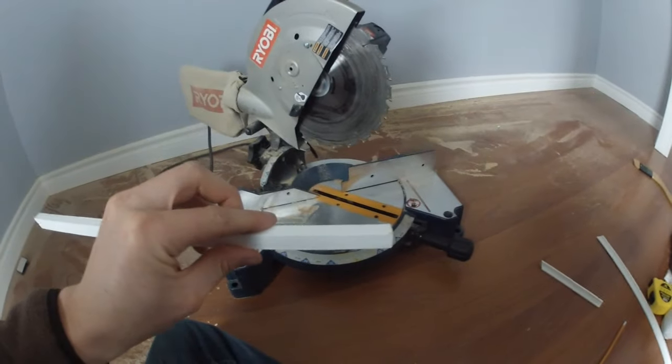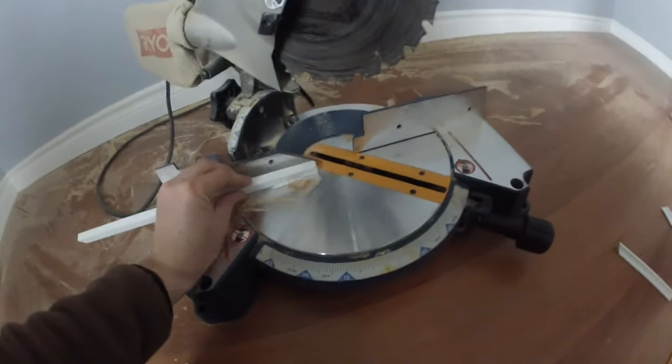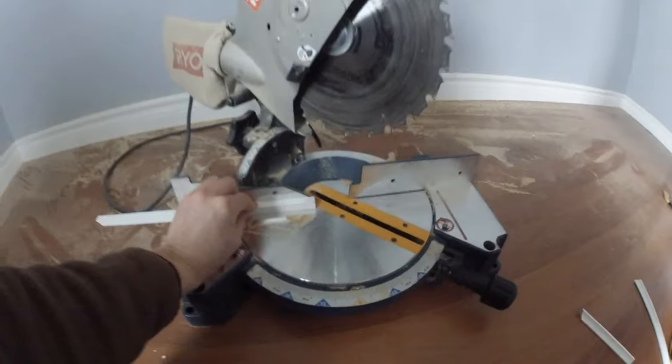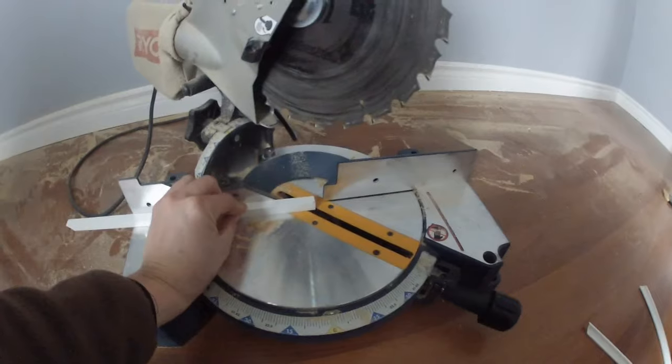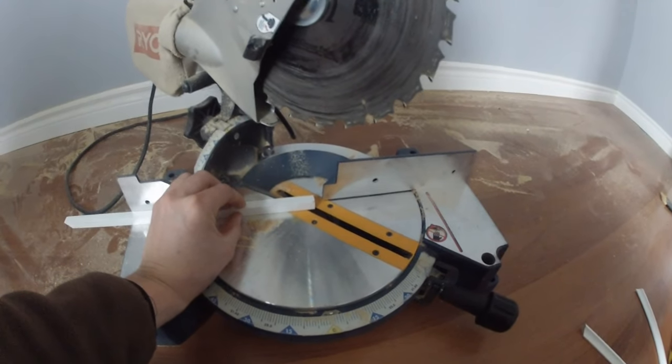You're going to take your cove molding, put the open face to the guard on the saw of your miter. Set the miter at 45 degrees and make your first cut.